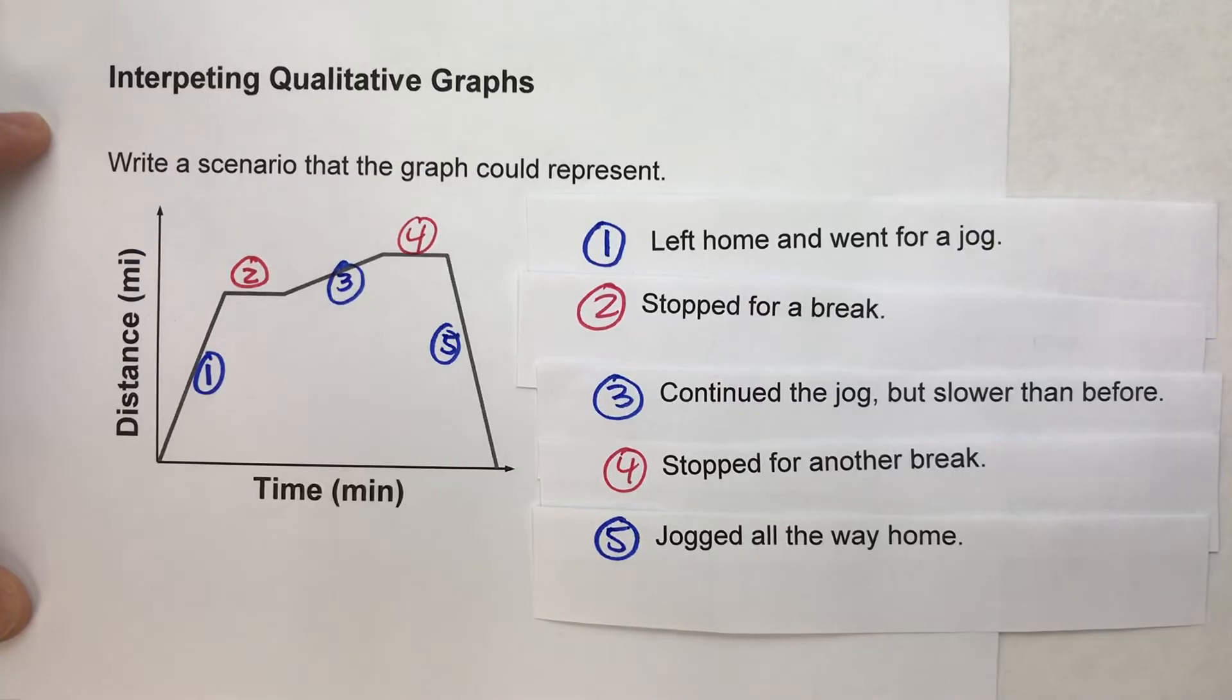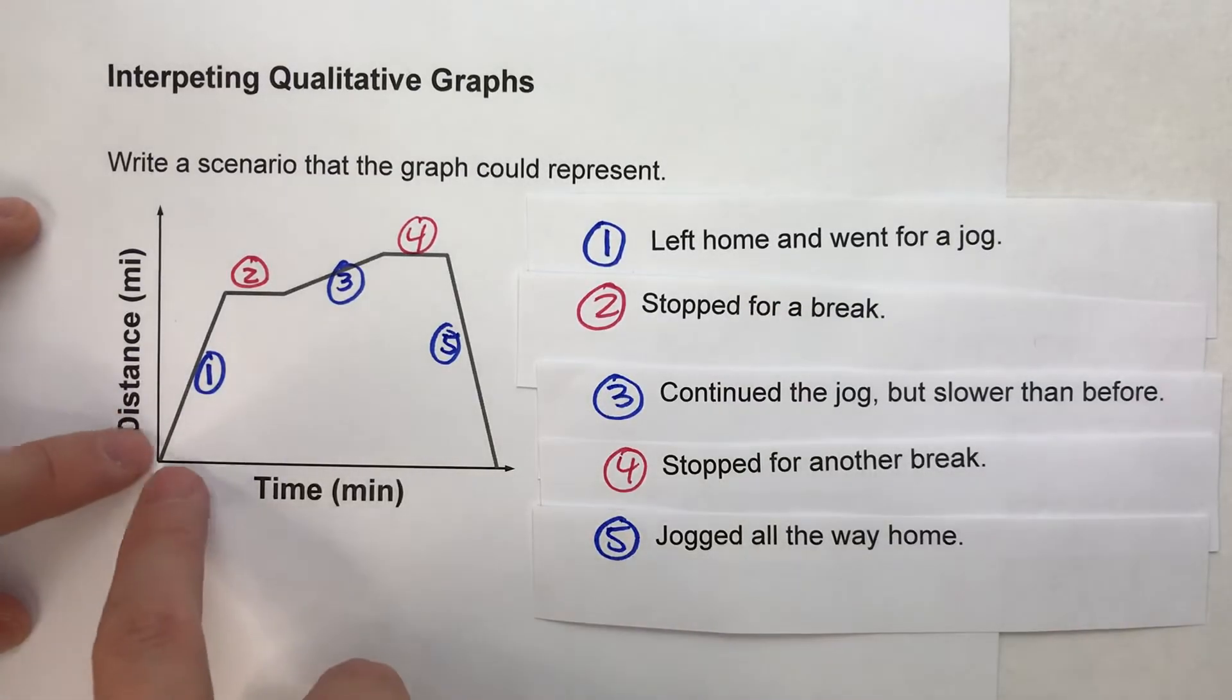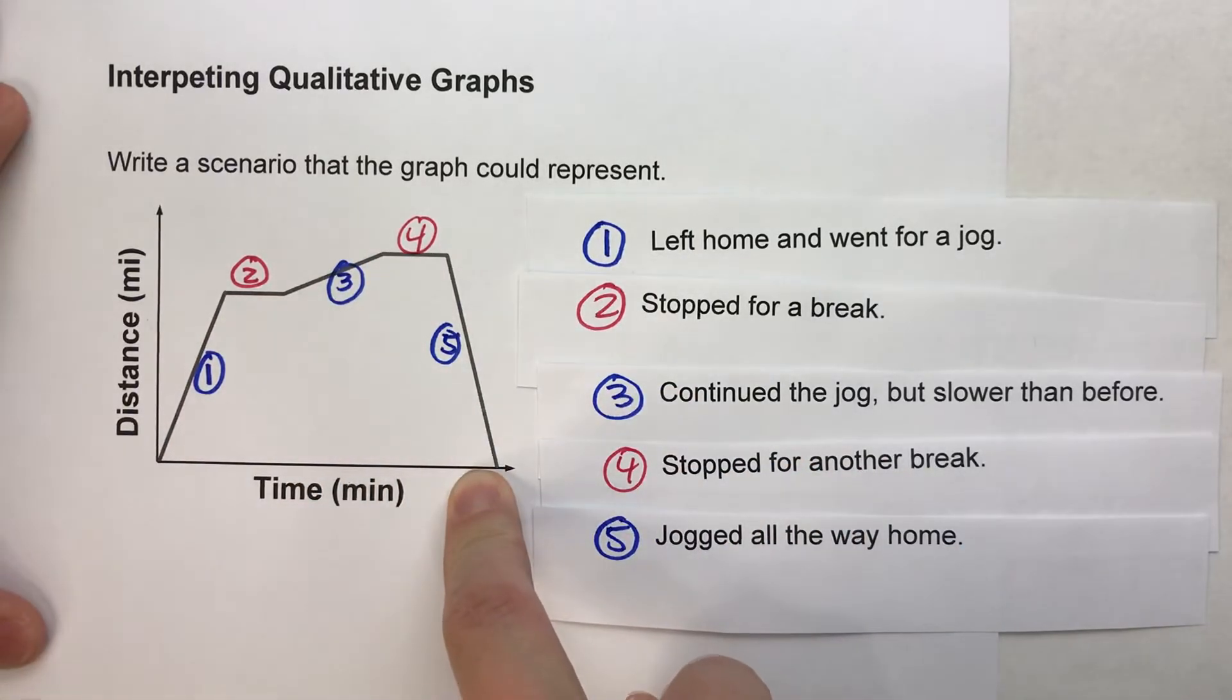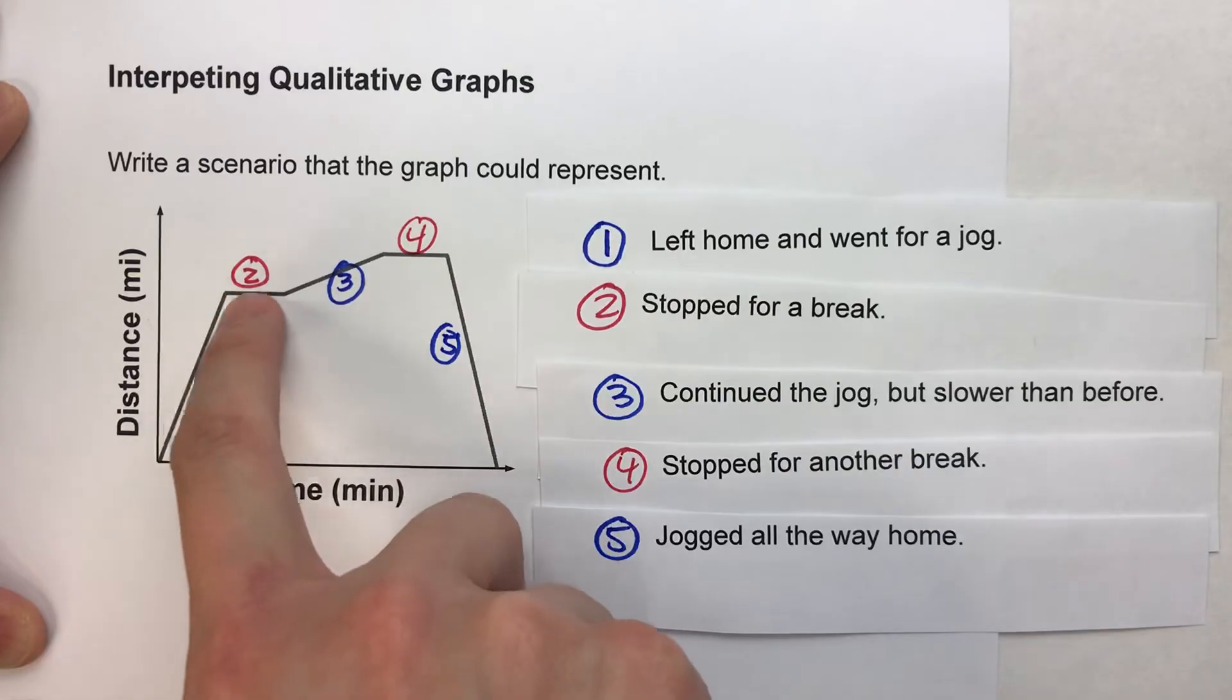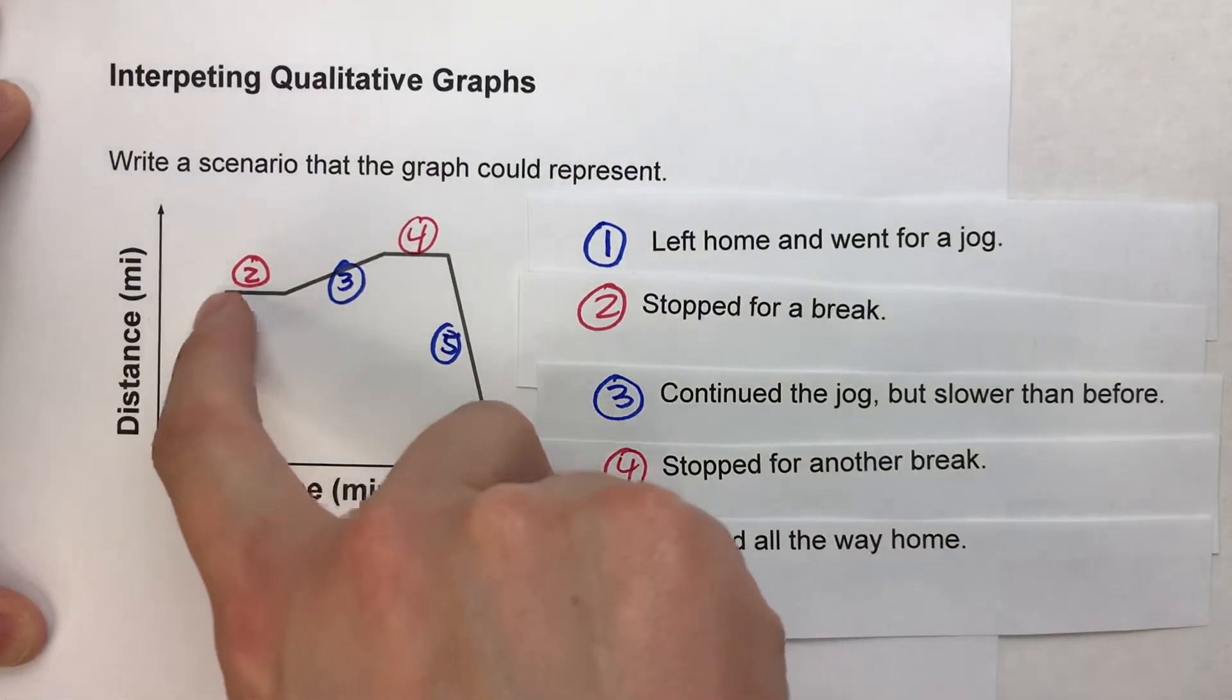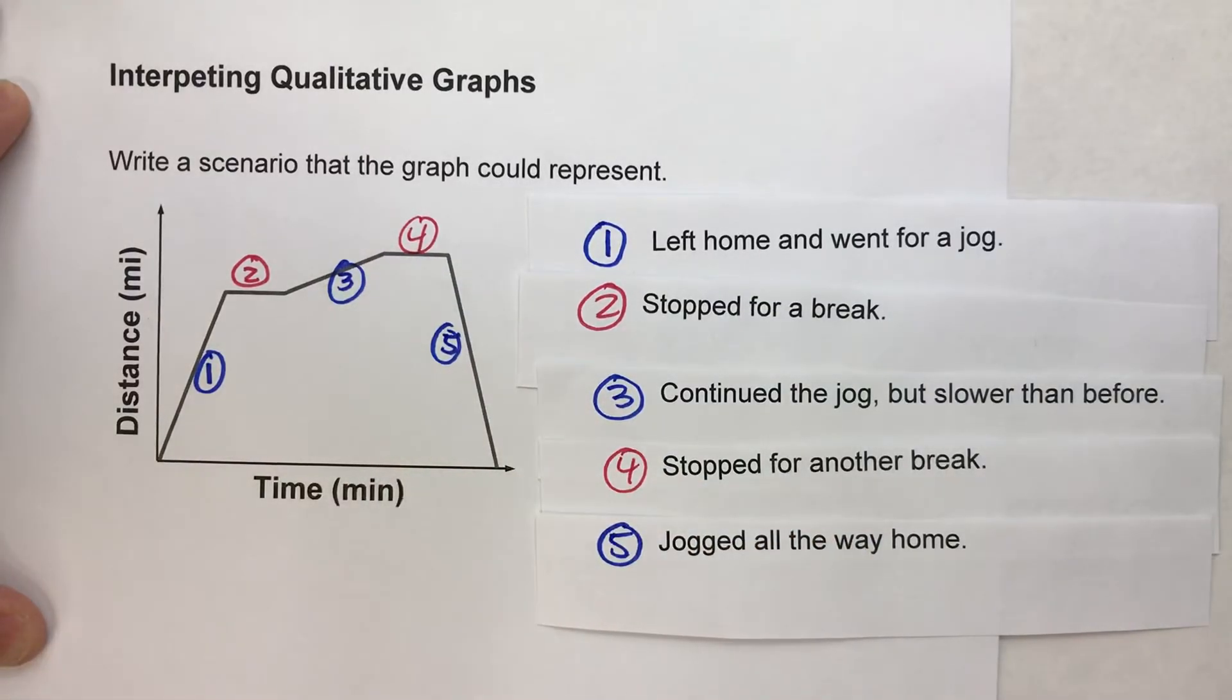So the key to qualitative graphs is that there are no numbers on here so you're really relying on the shape of the graph. If it's increasing, constant, or decreasing. And you're also paying attention to how steep the lines are because that tells you something about the graph. So hopefully this video helped you. If it did, please hit that like button. Also subscribe because it really helps us out. But with that being said, good luck on your math and I will see you next time.